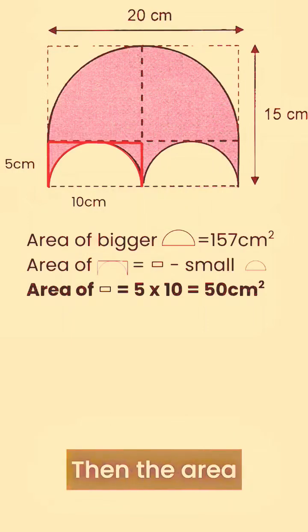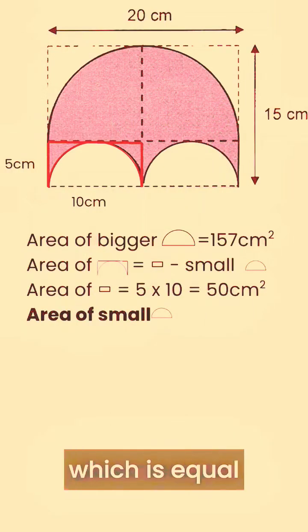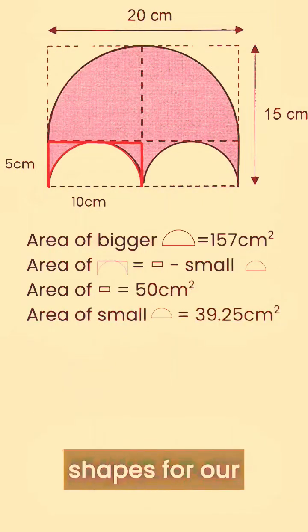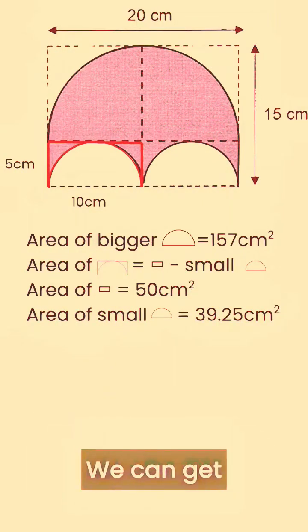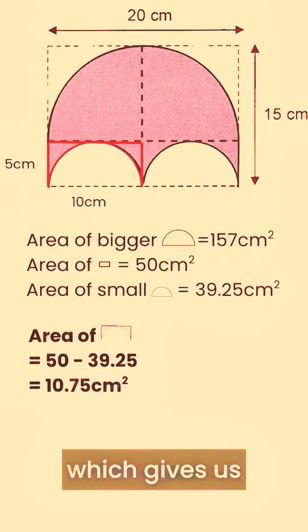Then the area of the small semicircle, which is equal to 39.25 cm². Now we know the different shapes for our semicircle and rectangle. We can get the area of the smaller shaded area, which is basically 50 minus 39.25.